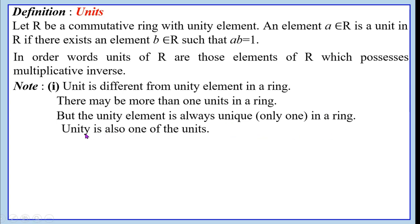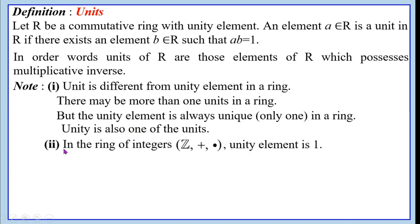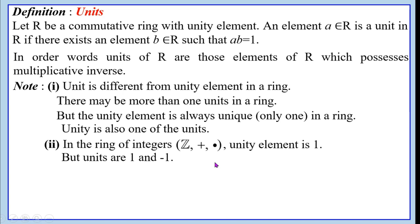Unity is also one of the units. In the ring of integers Z under addition and multiplication, the unity element is 1. But the units are 1 and −1, because the only elements in the ring of integers that have a multiplicative inverse are 1 and −1. That is, 1 × 1 = 1, and (−1) × (−1) = 1.